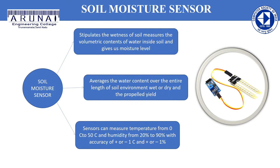Soil moisture sensor: Soil moisture sensors measure the water content in the soil and can be used to estimate the amount of stored water in the soil horizon. The sensors do not measure water in the soil directly. Instead, they measure changes in some other soil property that is related to water content in a predictable way. Each sensor manufacturer uses different technologies to measure soil moisture content.